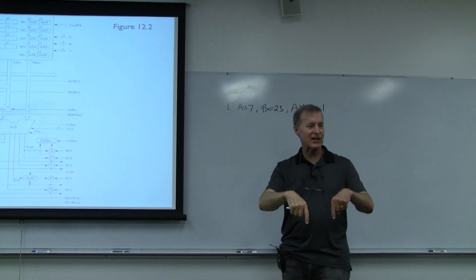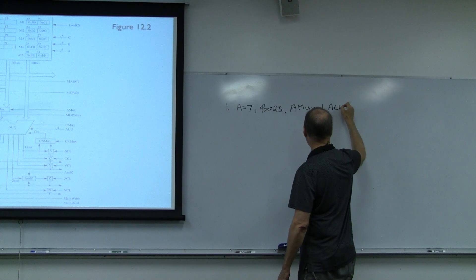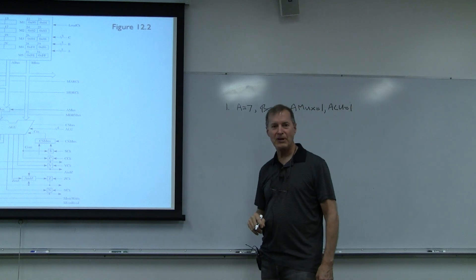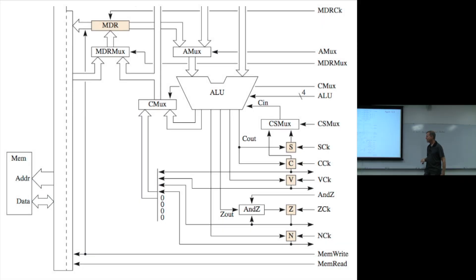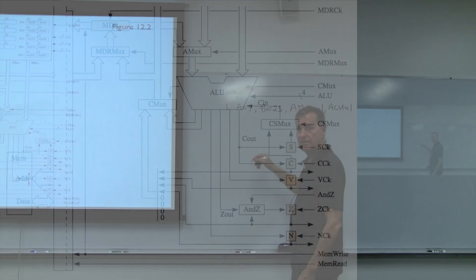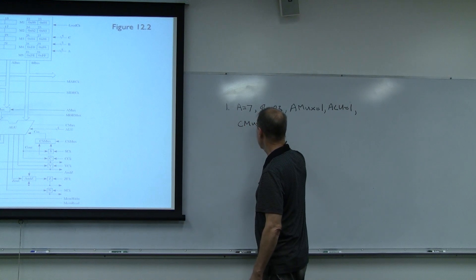Both inputs are presented to the ALU. We need to select the A plus B function — that's ALU equals 1. Then the result needs to go back up through the CMUX. We want to send it through the right side, so CMUX equals 1.